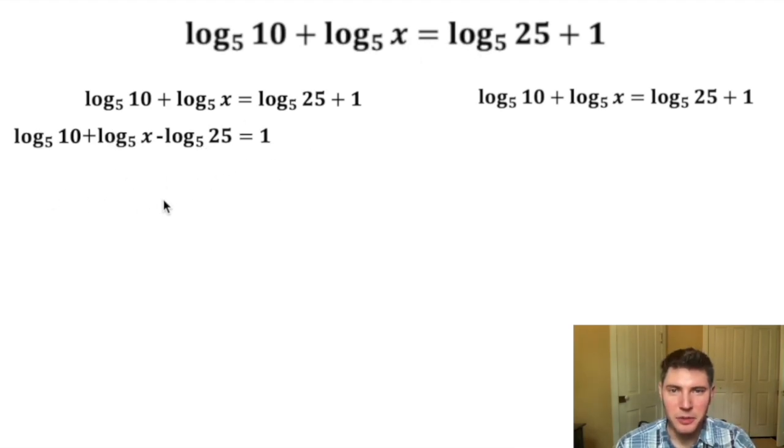Now we have three logarithms with a base of 5 on this left-hand side, so we can condense them all into a single logarithm. And that single logarithm will also be a log base 5. So there's pluses and minuses, so that means it's going to be a fraction.